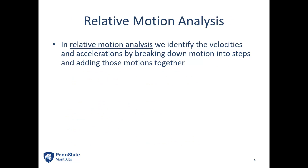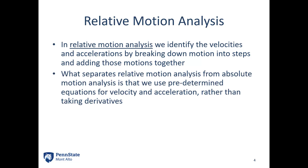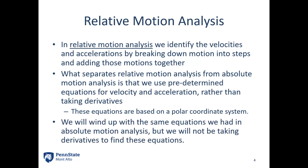In relative motion analysis, we identify the velocities and accelerations by breaking the motion down into steps and adding those steps together. What separates this is we use those predetermined equations — pre-derived based on the polar coordinate system — so we're dealing with r and theta directions. We wind up with the same equations as in absolute motion analysis, just taking a different route. In the end it's the same result; it's all about what's the easiest way to get to those final equations.